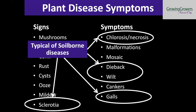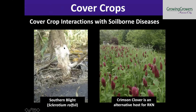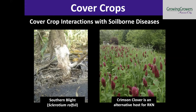For soil-borne diseases, you're looking at things that enter the plant through the root system or stem and cause diebacks, chlorosis, and necrosis. There are some interesting interactions between soil-borne diseases and cover crops. Southern blight is a pathogen that loves organic matter — it loves carbon in all its forms. It can be really problematic in farming systems that utilize a lot of cover crops, because it likes to crawl across the top layer of soil, eat that straw or mulch, and eventually make its way to the tomato or pepper to cause disease. Crimson clover can also be an alternative host for root-knot nematodes. Keep in mind that as great as cover crops are for the soil, they can also complicate disease management.